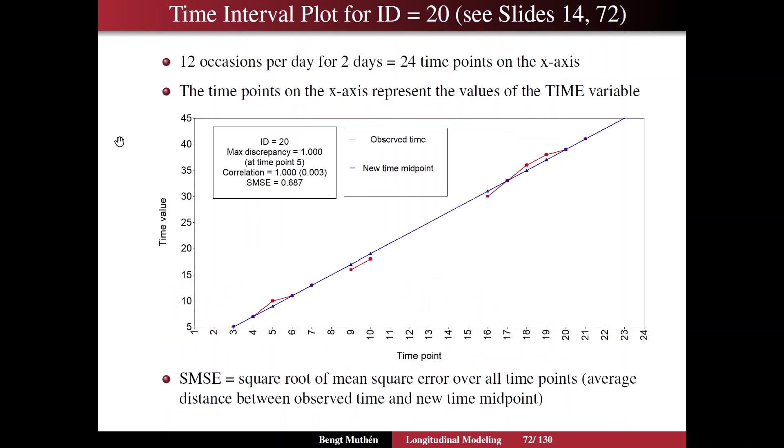We're going to take a special look at slide 72, the time interval plot for one person, ID equals 20. We've looked at this person before on slides 14 and 72. You may want to go back and compare to those slides when you study this slide. So we're going to take a look at 12 locations per day. That's t-interval equals 2, gives you 12 locations per day. But we're only going to take a look at the first two days to make it simple.